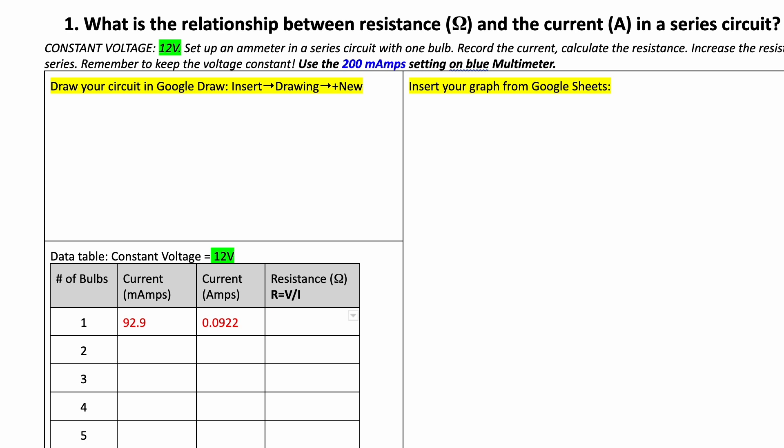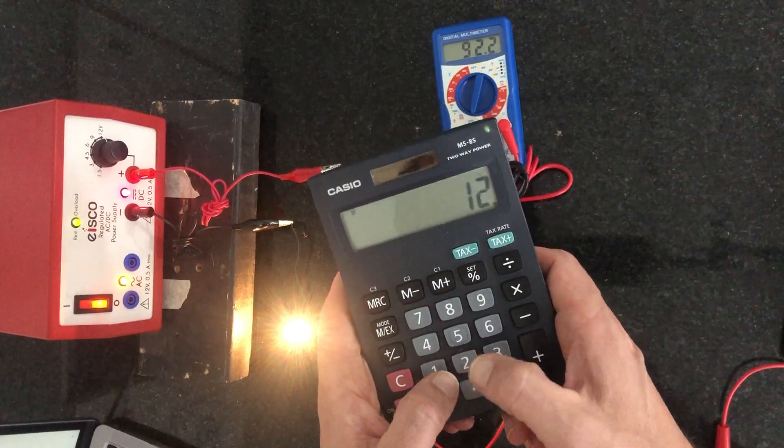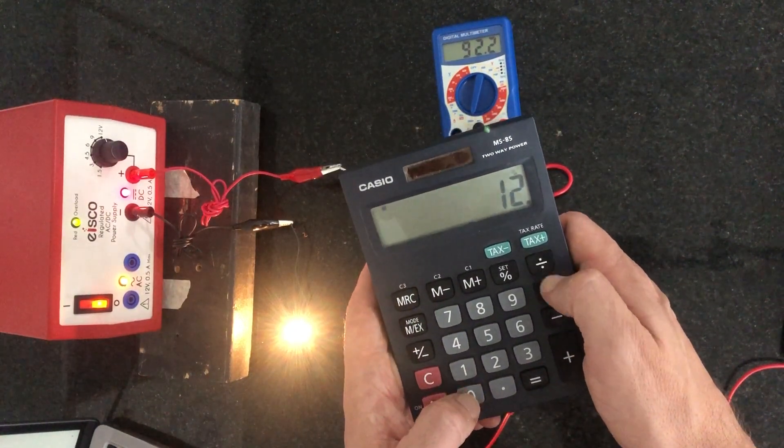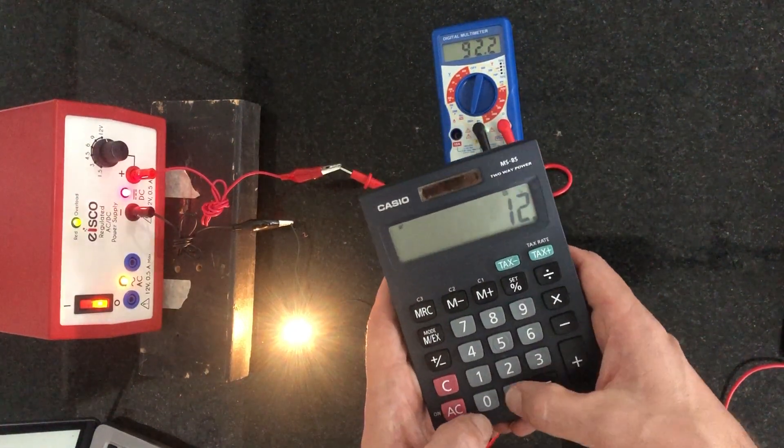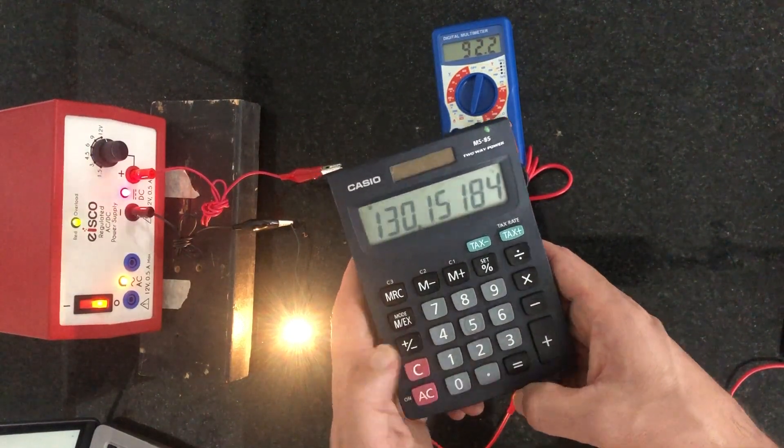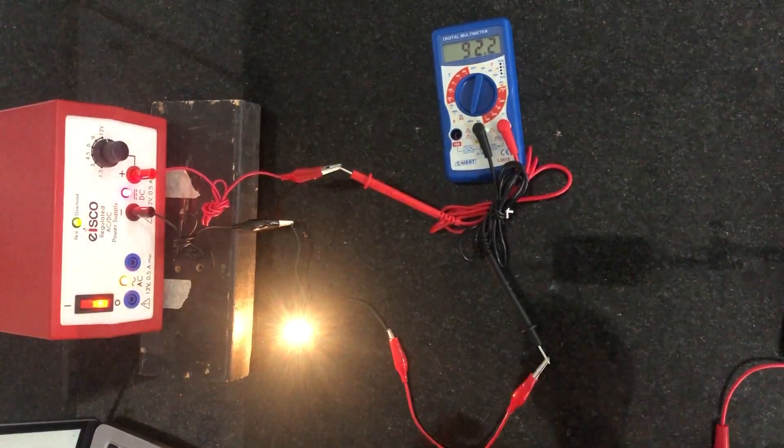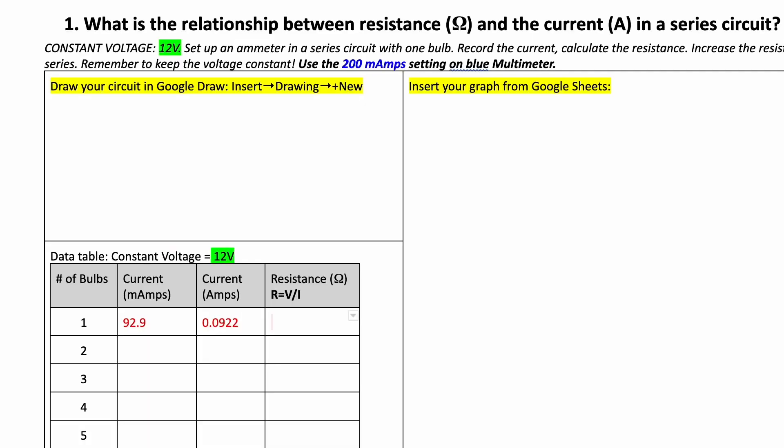Then I'm gonna change that to my current in amps, which is gonna be 0.0922. Then I'm going to calculate my resistance. And I'm gonna calculate my resistance by saying 12, voltage divided by the current, 0.0922 is equal to 130 ohms. That's a lot of resistance. I was really surprised when I saw that. Okay, so that's how much resistance we're having in one of these bulbs.